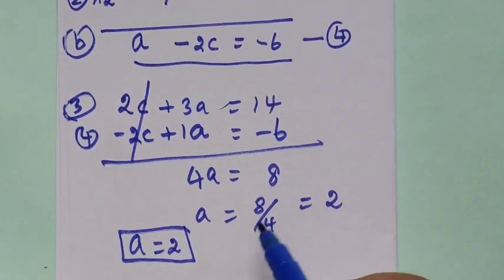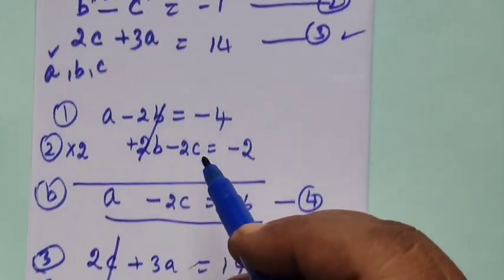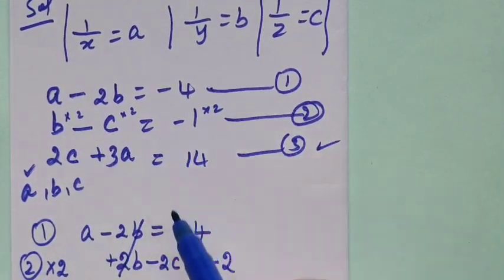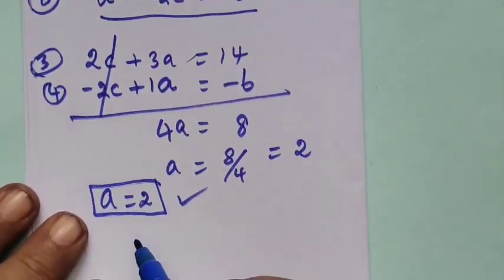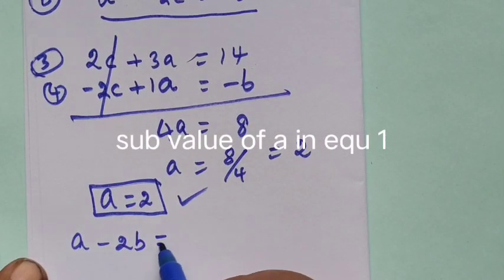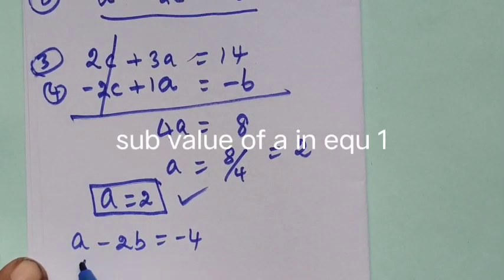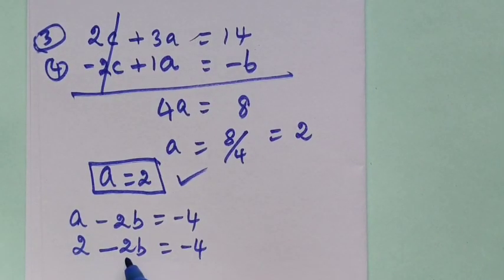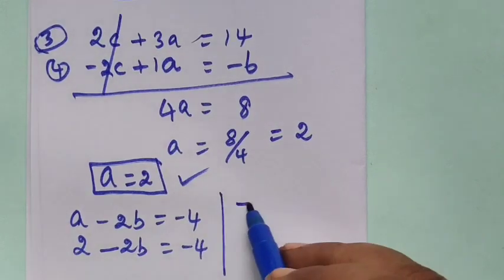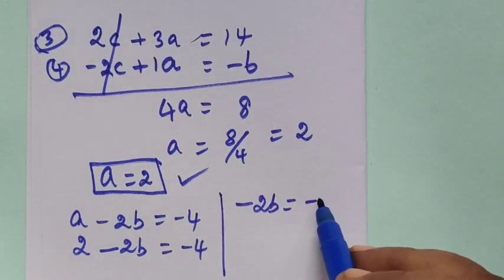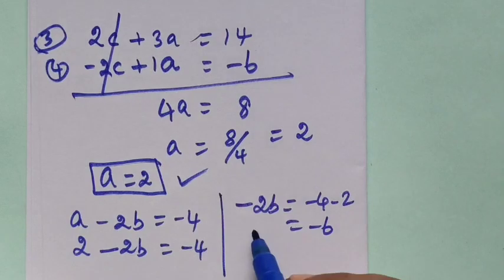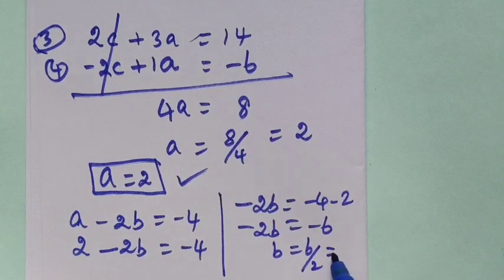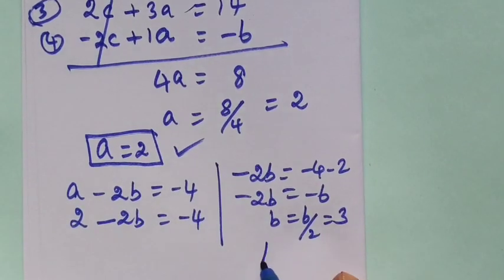Once if you get 1 value you can immediately get the remaining value. A is 2. Substitute in equation 1: a minus 2b equal to minus 4, so 2 minus 2b equal to minus 4. Minus 2b equal to minus 6. B equal to 6 by 2 equal to 3.